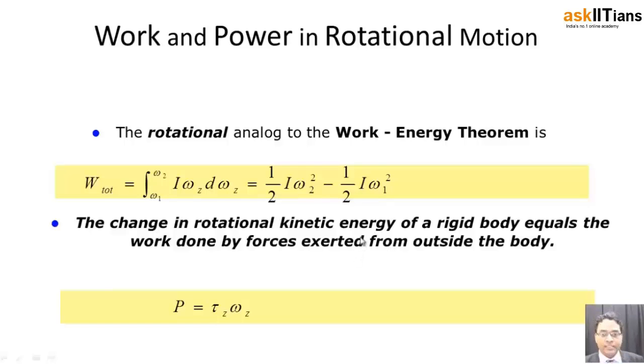And the rate of change of work done with time gives you the amount of power. So the power that is produced is equal to the amount of torque into angular velocity. The amount of torque into angular velocity gives you the amount of power. So that tells us about what all is the energy in the rotational motion and how much is the power.